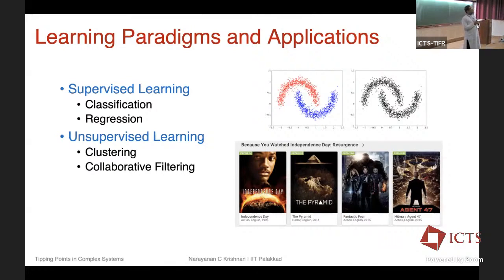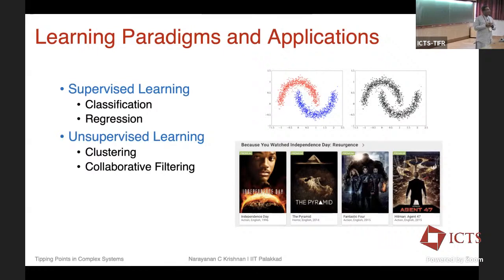That is the clustering algorithm. You have the very classical k-means clustering algorithm, where given data you assume the clusters are basically Gaussian distributions — spherical or ellipsoidal in nature — and the goal is to find how many such clusters or what those clusters are. That is one example of unsupervised learning.